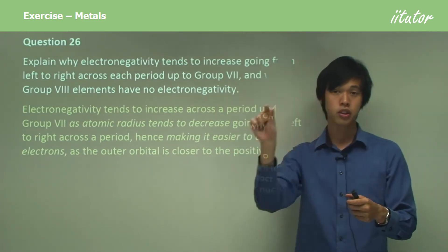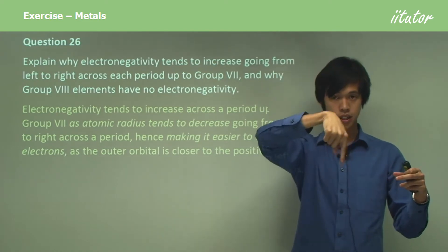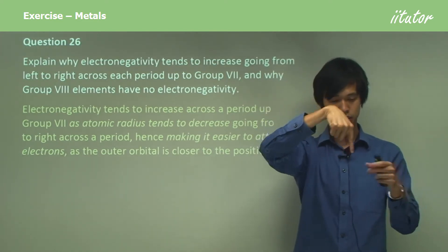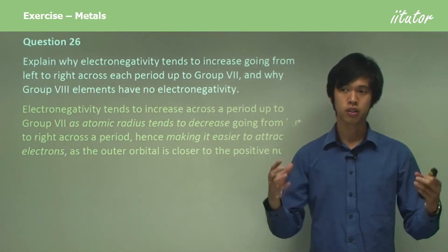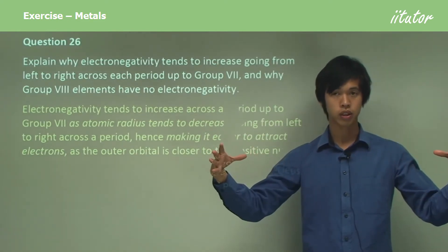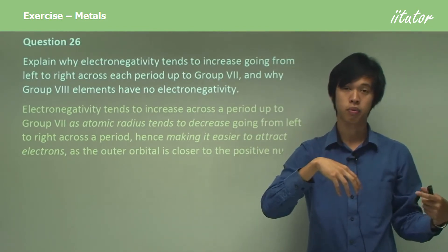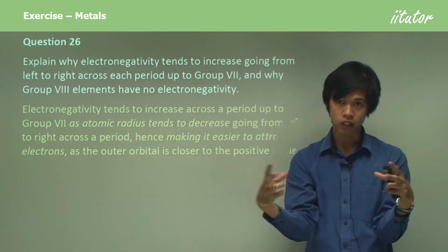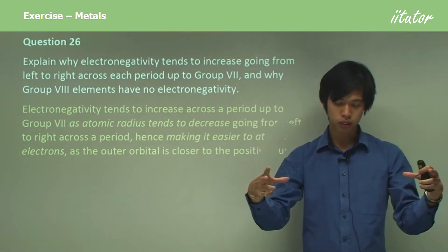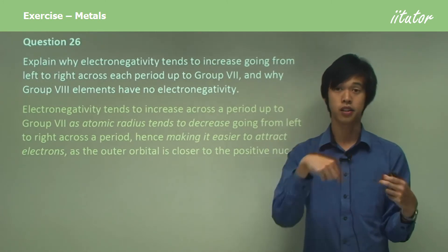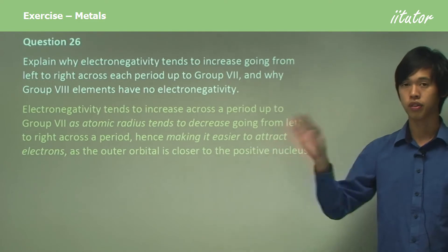If you're going across period 2, you've got two shells. So the atomic radius is from the centre of your atom to the second shell. But as you increase the number of protons, the force of attraction between the electrons in this outer shell and your nucleus is bigger, so it will actually pull the shell closer to the nucleus. Because it's pulling the shell inwards, the radius has actually gone down. So the atomic radius decreases as you go from left to right.